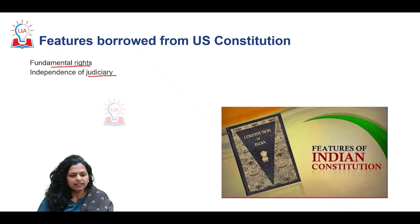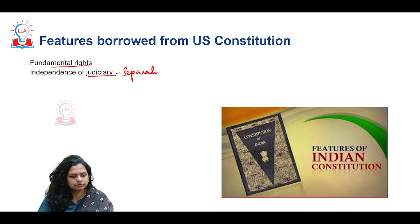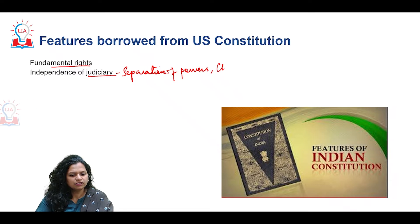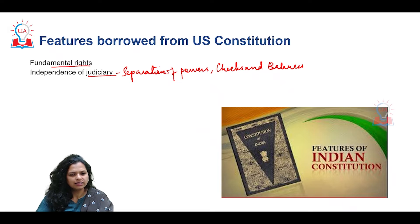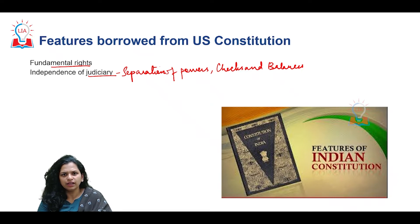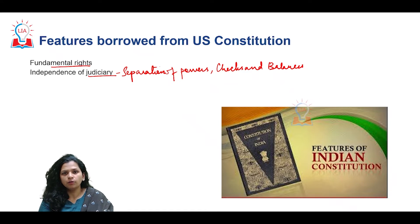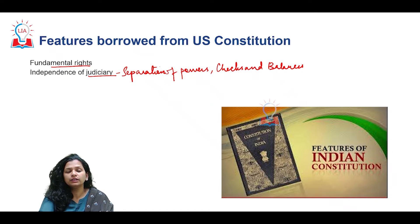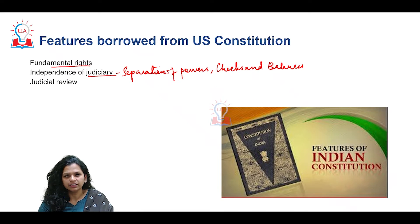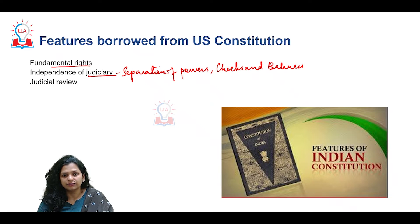The independence of the judiciary is another borrowed feature. In the United States there is a system of separation of powers and also checks and balances. The kind of strict division present in the United States is not present in India, but nevertheless the judiciary gets separation from the executive and the legislature, which amounts to independence of the judiciary. Judicial review is also extremely important in India — it forms a part of the basic structure of the constitution.